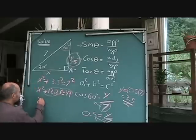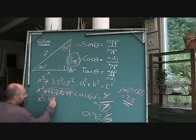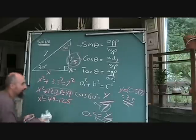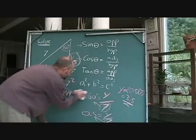So it's going to be x squared is equal to 49 minus 12.25, okay? I'm just going to erase these guys so we've got more room.